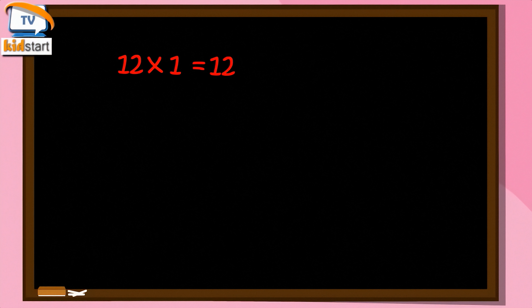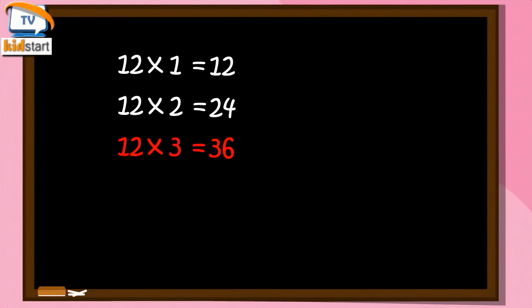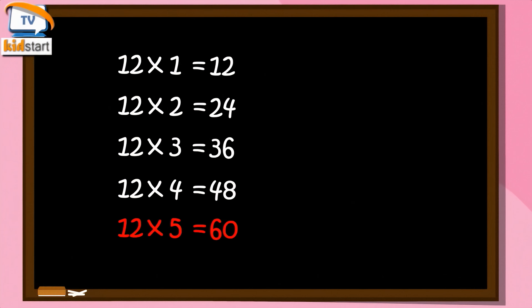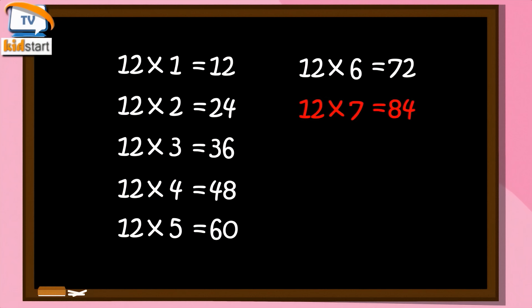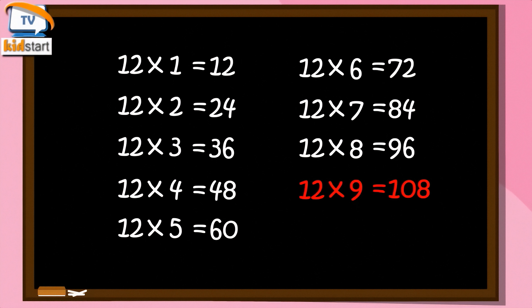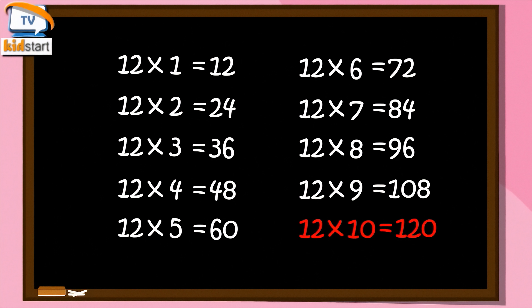12 ones are 12. 12 twos are 24. 12 threes are 36. 12 fours are 48. 12 fives are 60. 12 sixes are 72. 12 sevens are 84. 12 eights are 96. 12 nines are 108. 12 tens are 120.